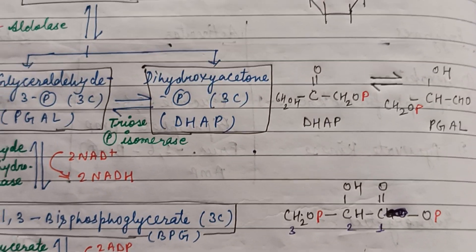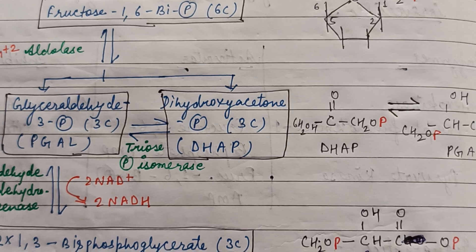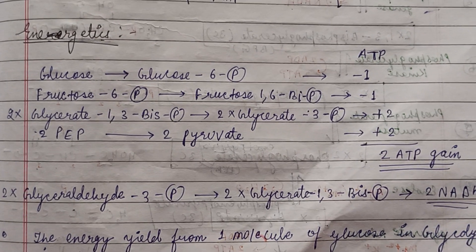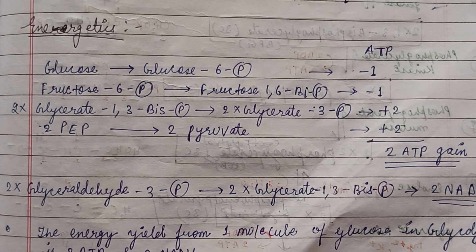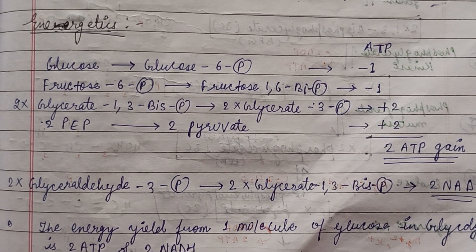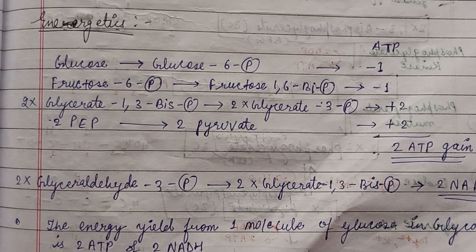That's all about the glycolysis pathway. The energetics are there, so we can conclude that the energy yield from one molecule of glucose in glycolysis is 2 ATP and 2 NADH. Thank you.